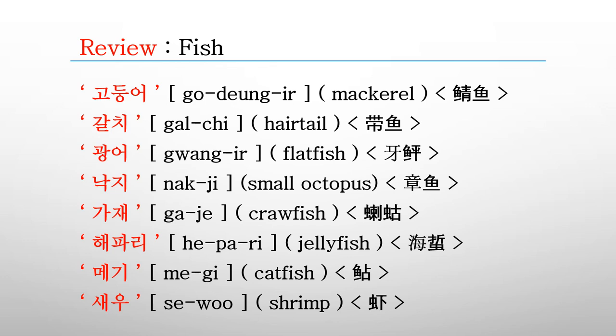The small octopus is 낙지. The crawfish is 가재. The jellyfish is 해파리. The catfish is 매기. The shrimp is 새우.